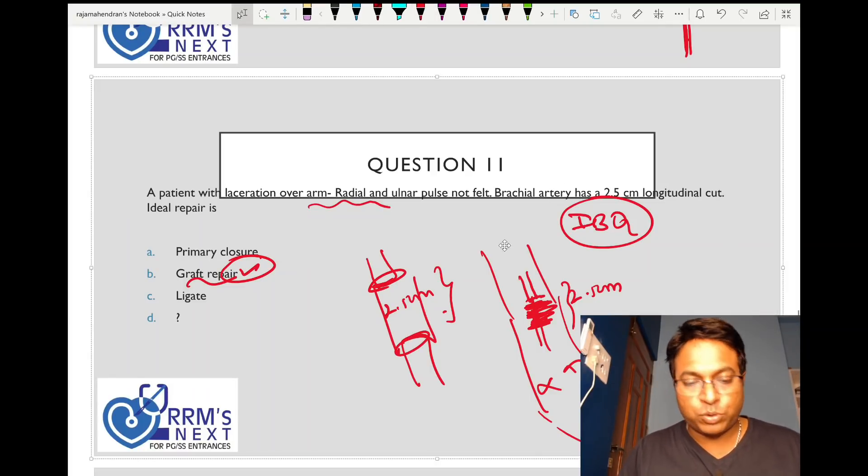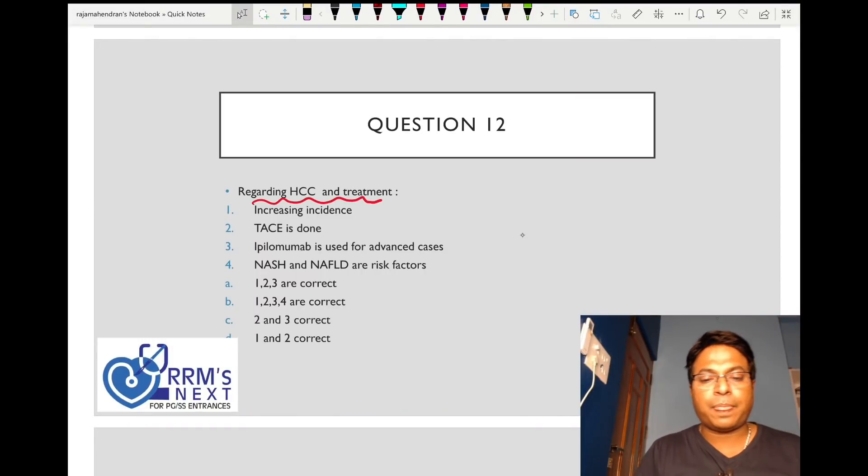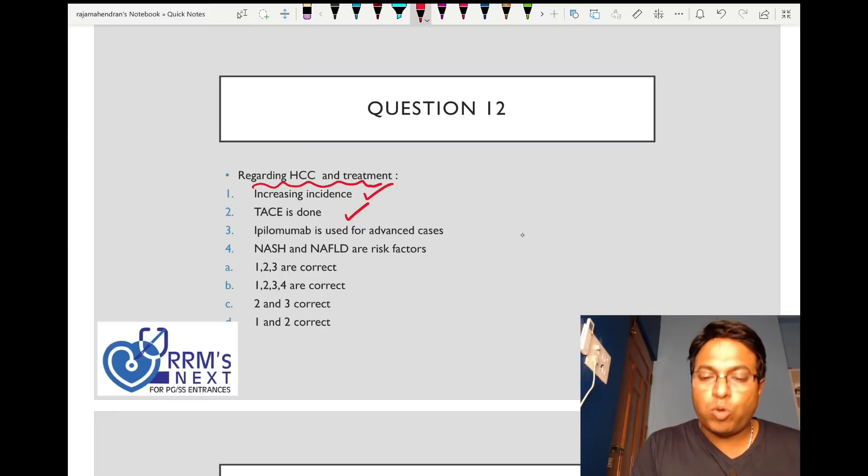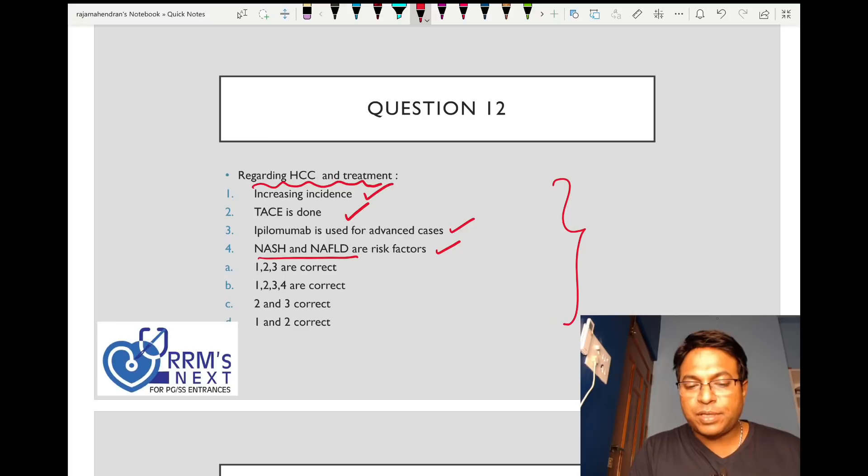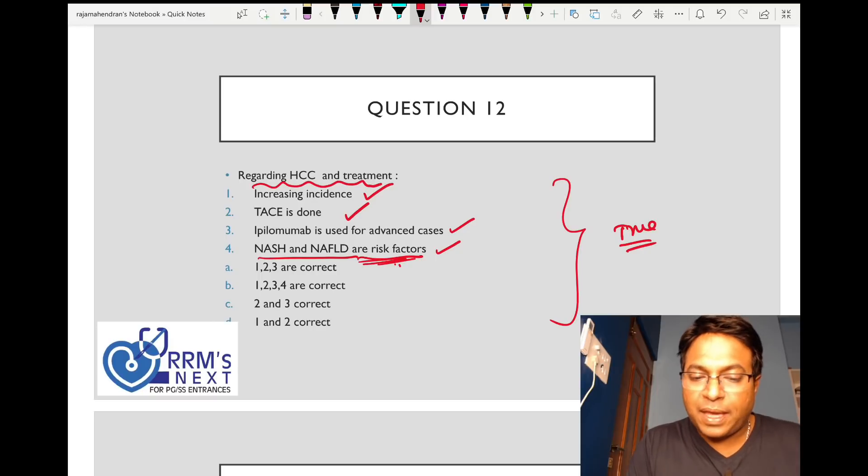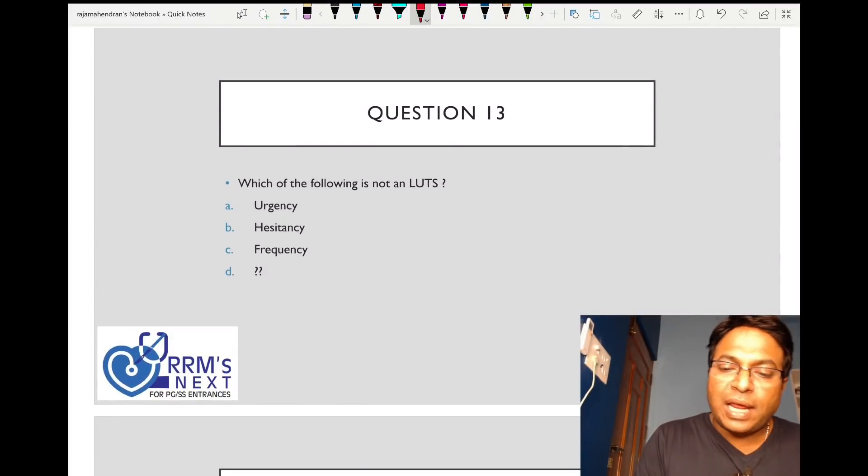Regarding hepatocellular cancer and treatment: increasing incidence is true, transarterial chemoembolization is true, atezolizumab is a new drug introduced, NASH and NAFLD are risk factors. I'm not sure about the perfect choices but all these are true. There's increasing incidence, alcoholic fatty liver disease has high risk of HCC nowadays, and atezolizumab is new.